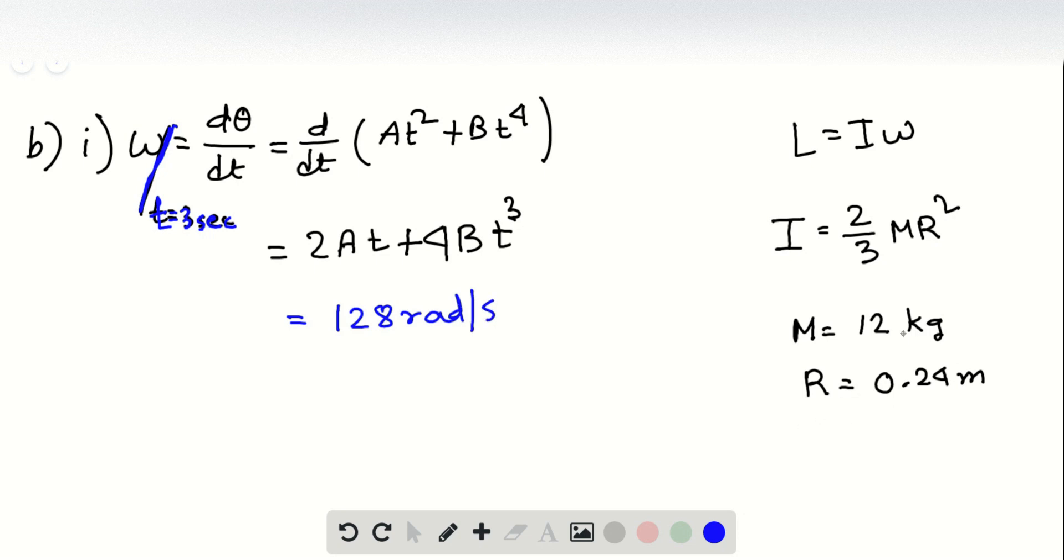So if we use this number and put these to calculate I, so if we then multiply I with omega, we'll get L.